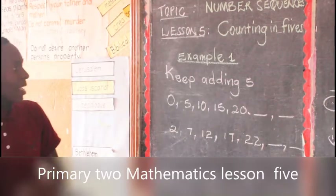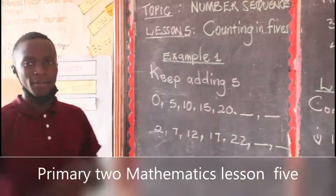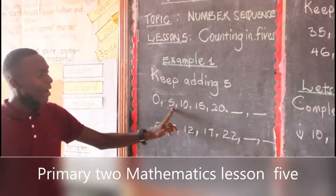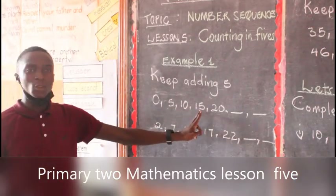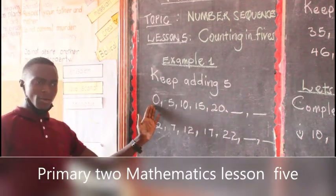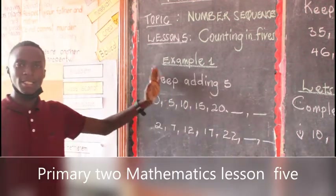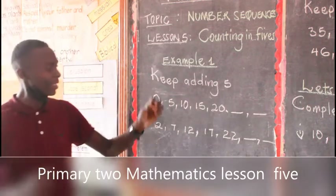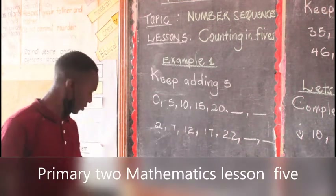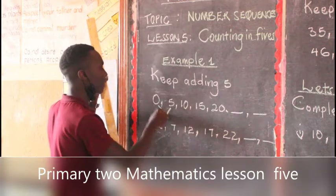Our Example 1 shows how we keep on adding 5. Someone started with 0, then 5, 10, 15, 20. What is the sequence here? If someone started from 0 and went to 5, they skipped 5 numbers. From 0 to 5, they added 5.